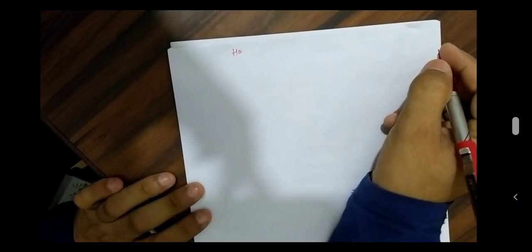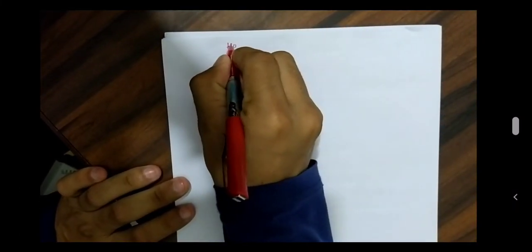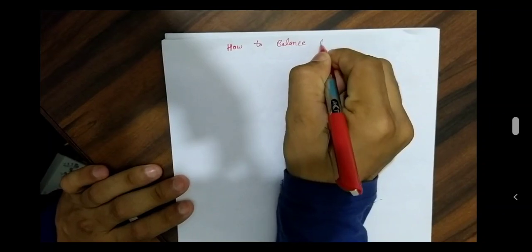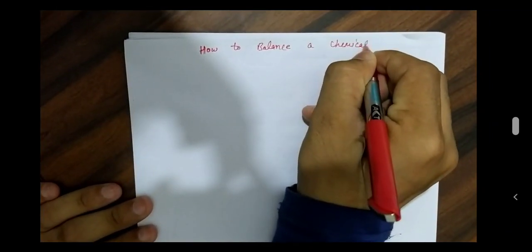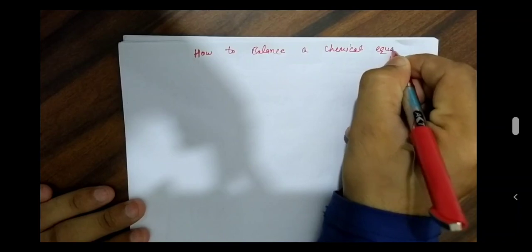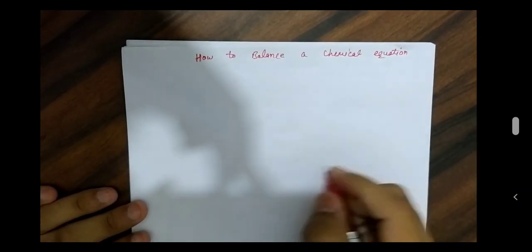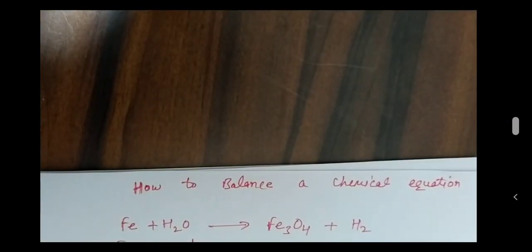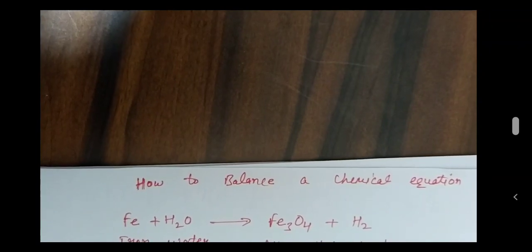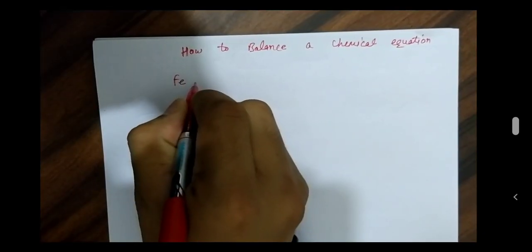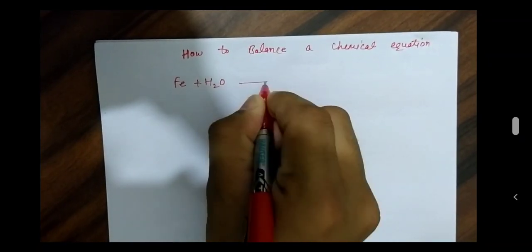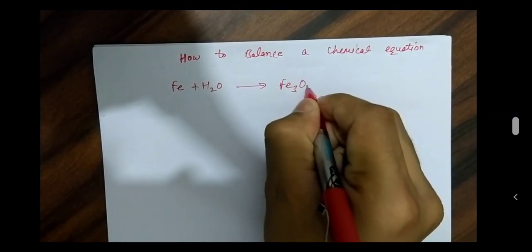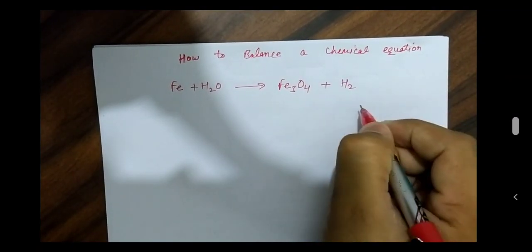Hello students, today we will discuss about how to balance a chemical equation. We have an unbalanced equation: Iron reacts with water to produce Iron Oxide plus Hydrogen gas.